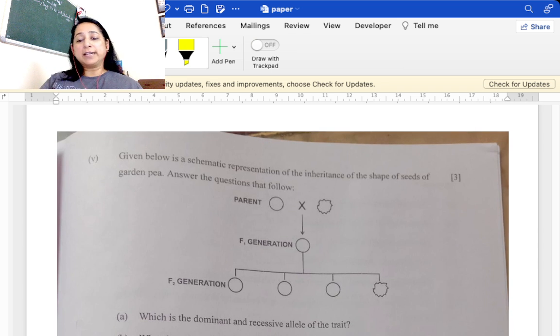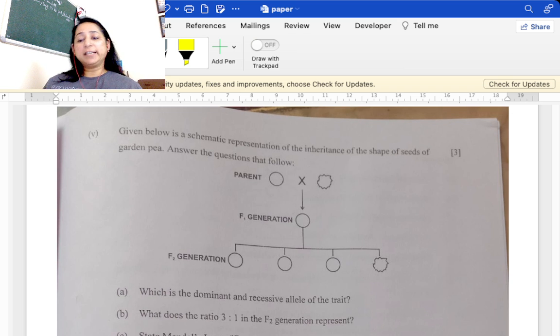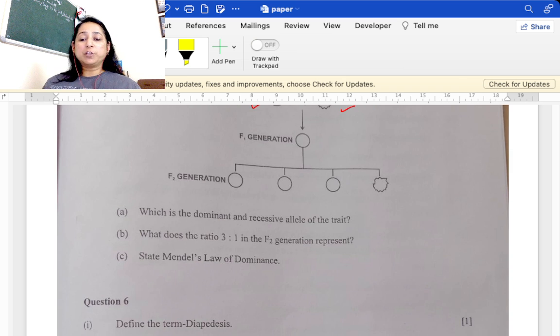Given below is a schematic representation of inheritance of shape of seed. They have given a picture: round seed, wrinkled seed, and then generations are formed. What is the dominant and recessive allele? Dominant is round, recessive is wrinkled. What is the ratio? Three is to one. What does the ratio stand for? It's a phenotypic ratio showing the type of seeds produced, three of them are round and one is wrinkled. State Mendel's law of dominance. You had to write the complete law.